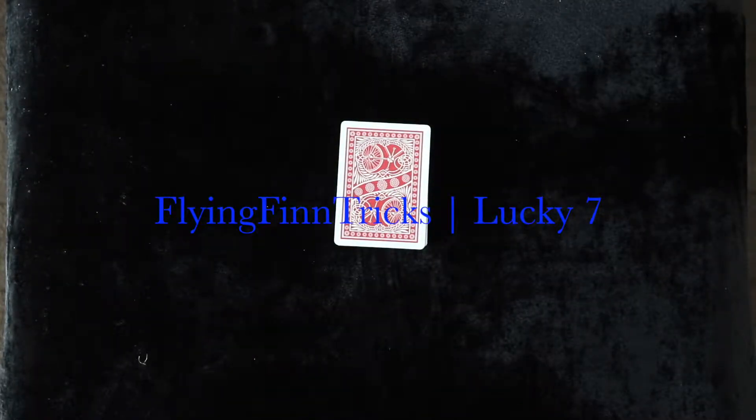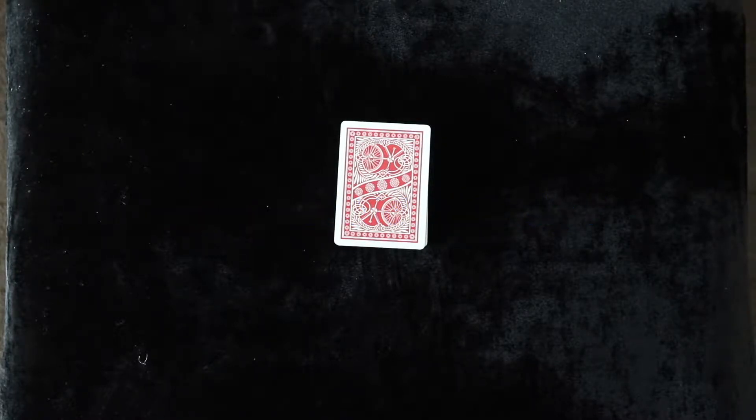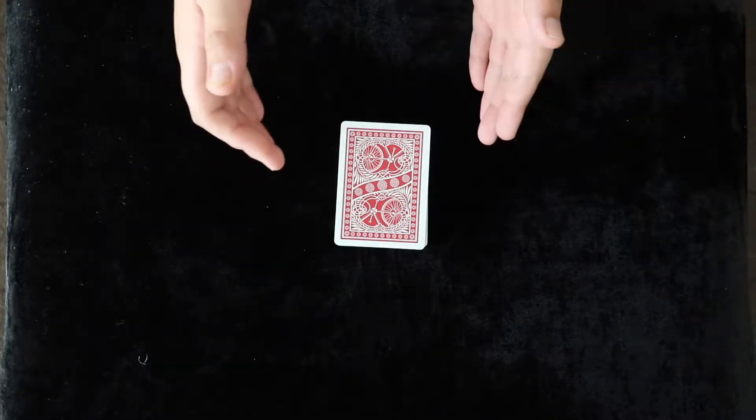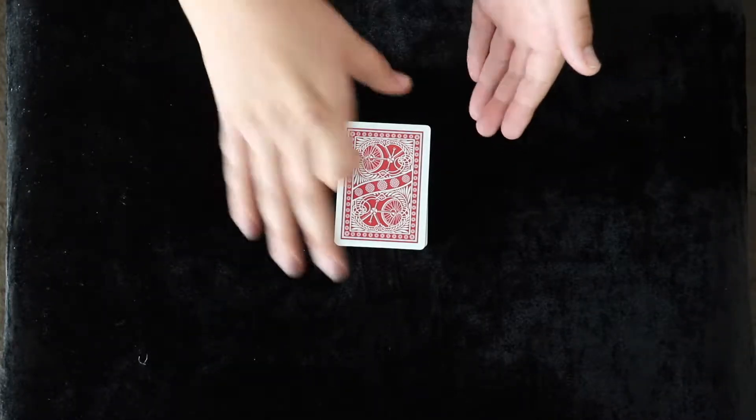Welcome to a new magic trick. Today we're doing a magic trick called Lucky 7. The credit to this trick goes to Carl Fulbs, who taught me this in his book, Simple Self-Working Card Tricks.